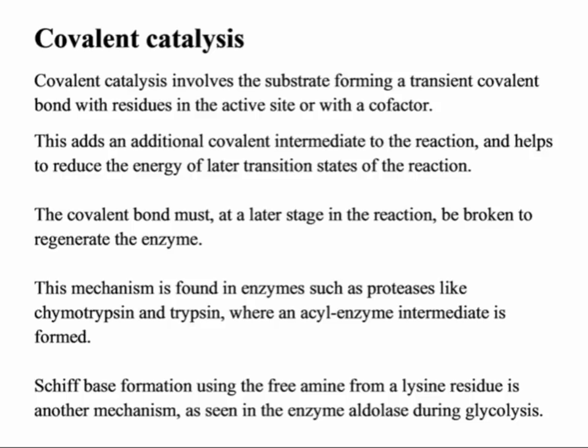Covalent catalysis involves the substrate forming a transient covalent bond with the amino acid R group in the active site of an enzyme. The formation of a covalent intermediate can substitute for the nucleophilic attack by a hydroxyl group and can also reduce the energy of later transition states of the reaction. The covalent bond must at a later stage be broken to regenerate the enzyme. This type of covalent catalysis mechanism is found in proteolytic enzymes such as chymotrypsin and trypsin, where an acyl enzyme intermediate is formed.